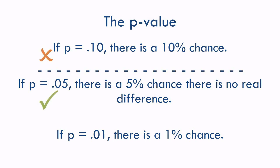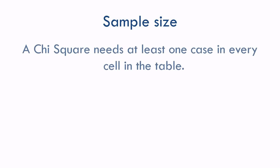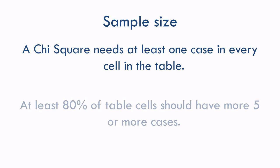Let's talk about sample size. Chi-square has some unique considerations. You need to have at least one case in every cell on the table — no zero counts allowed. Also, at least 80% of your cells should have a count of 5 or more, though some say all cells should have a count of 5 or more.